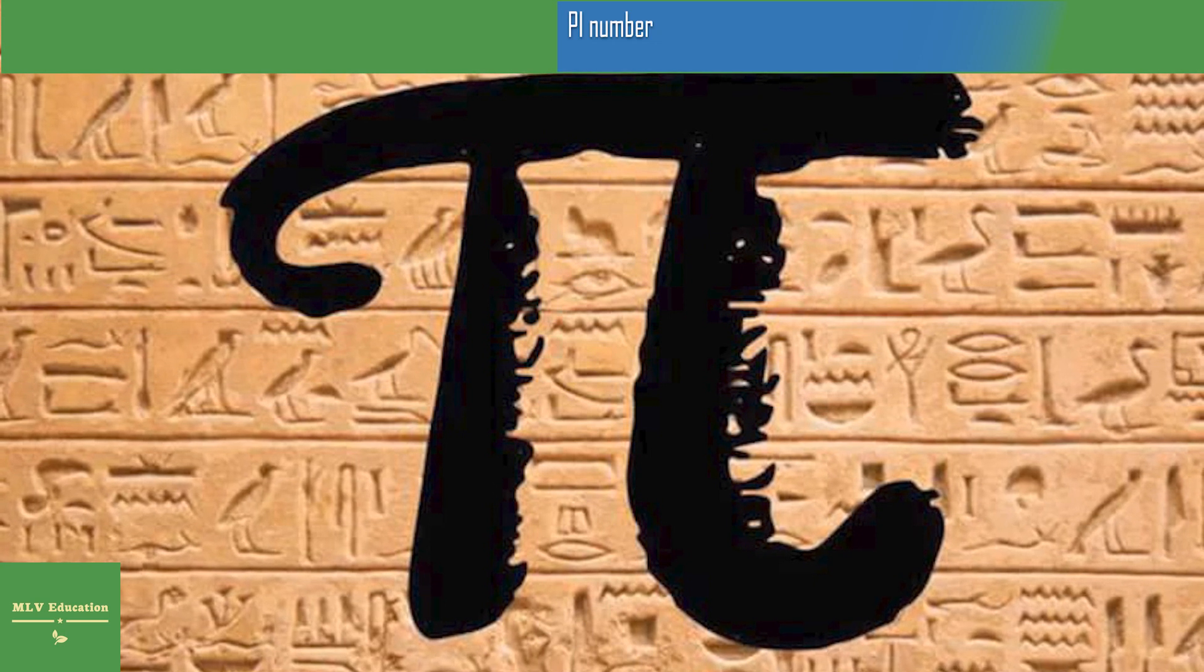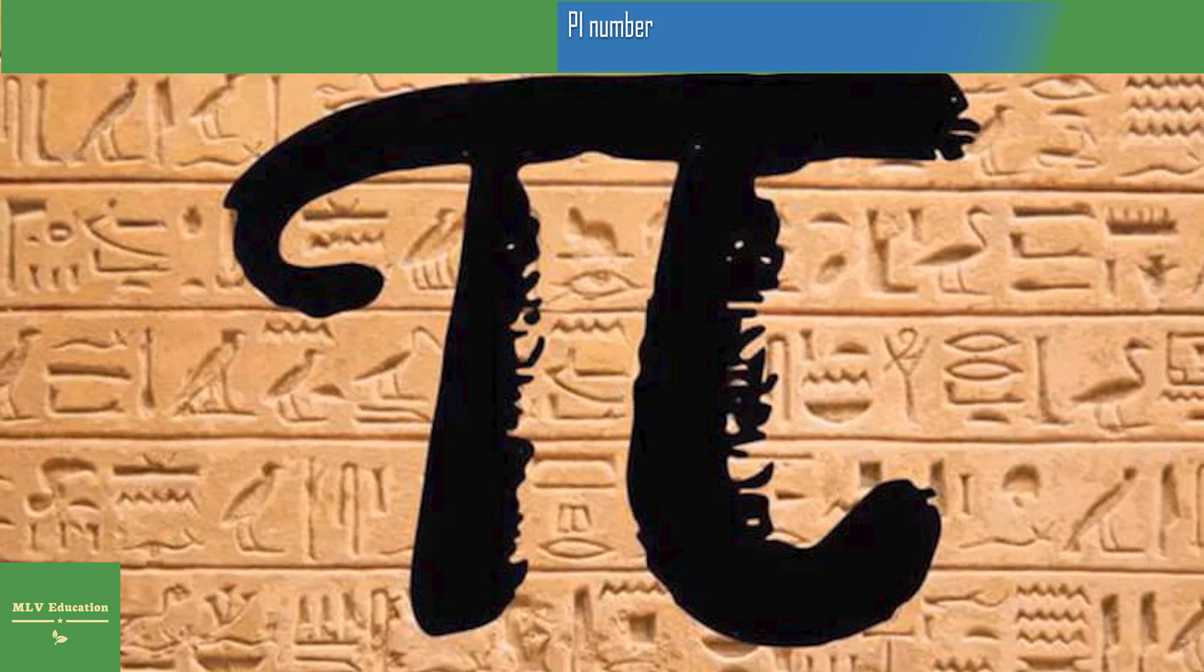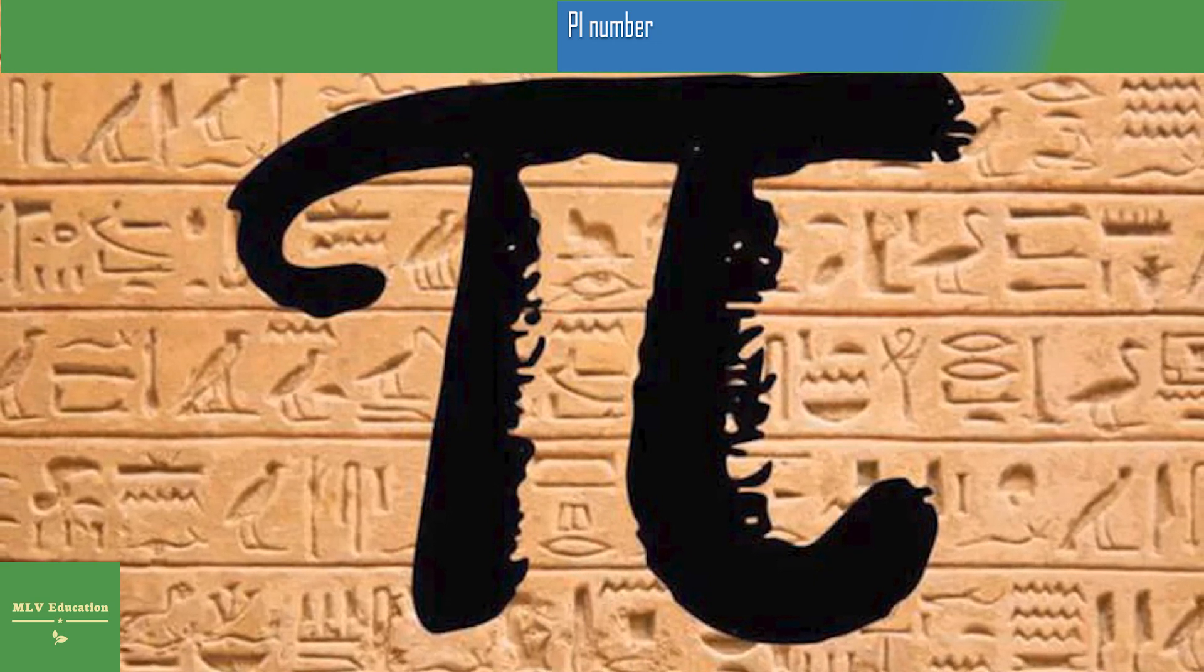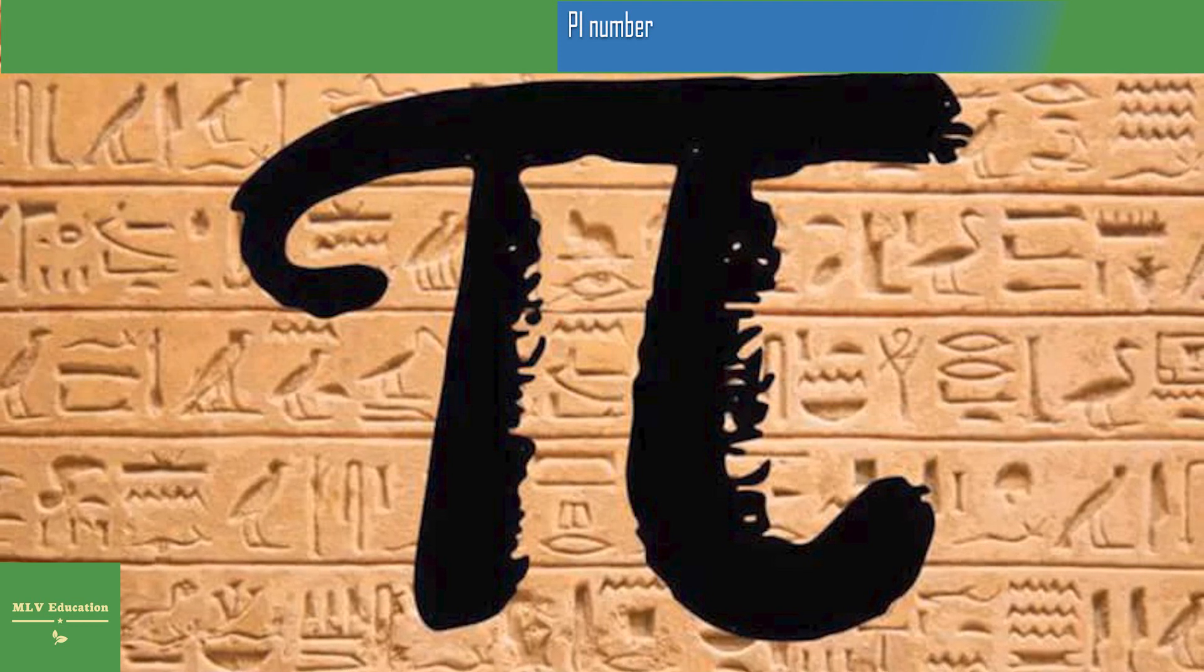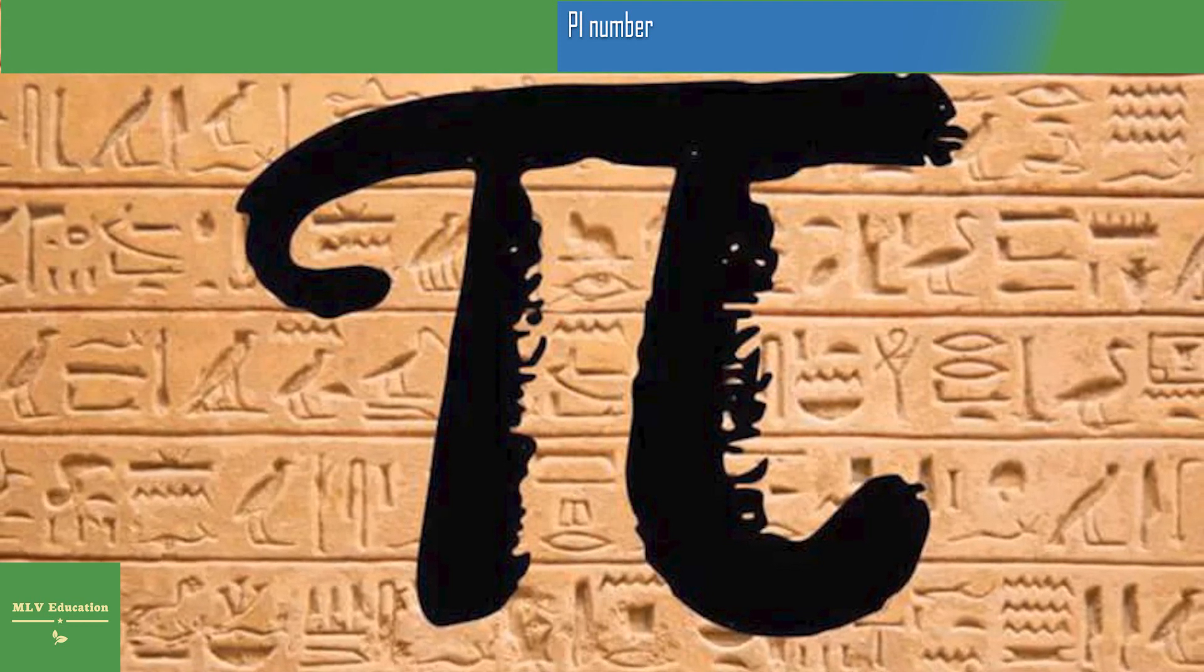A Ukrainian neurosurgeon claimed that he had memorized 30 million decimals of Pi and that he could say them randomly selected. It was found that there is a Pi coding in the alphabet as well.